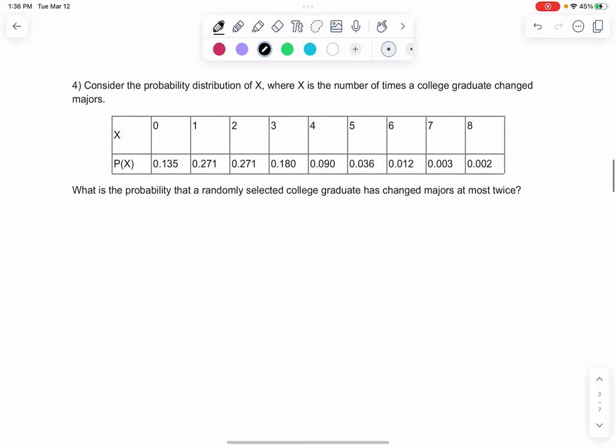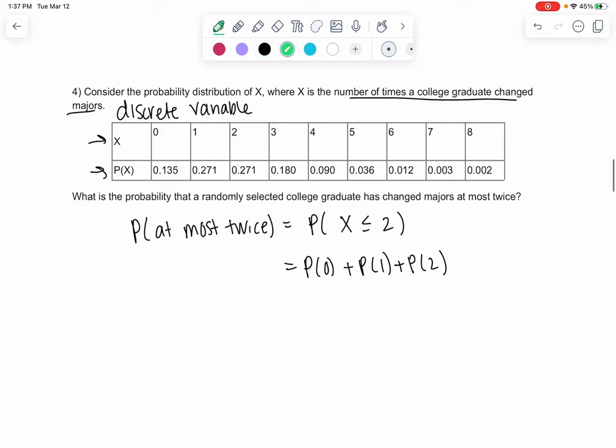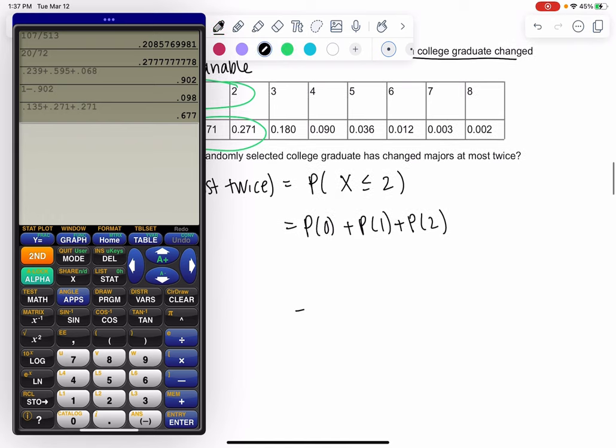All right, let's look at the probability distribution. That's where we have our variable is the number of times a college graduate changed majors - that's a discrete variable because it's a whole number. And then we have probabilities in the second row. So we want to find the probability that someone changed majors at most twice. At most twice means 2 at the most, 2 or less. So if we want to write it as a variable, it would be x less than or equal to 2. It just means we're going to take the 0 case, the 1 case, and the 2 case and add them together. So the chance that someone changed their major two times or less is 0.677, telling us a 67% chance.